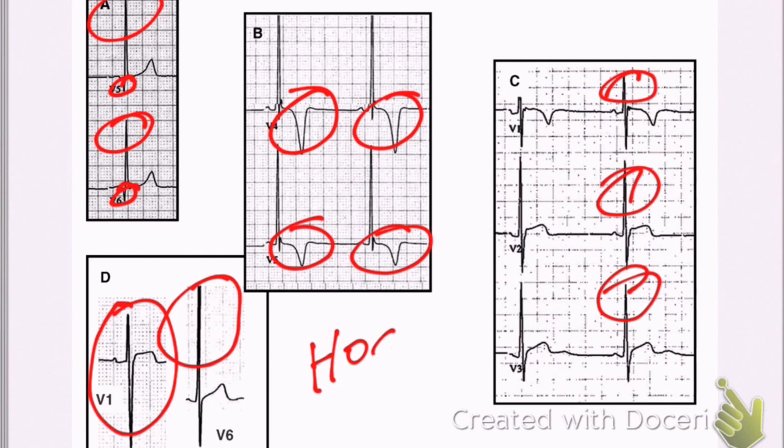So think hypertrophic obstructive cardiomyopathy when you've got big voltages, and particularly when you get those classic needle-like Q waves that are really short, narrow, and really deep.